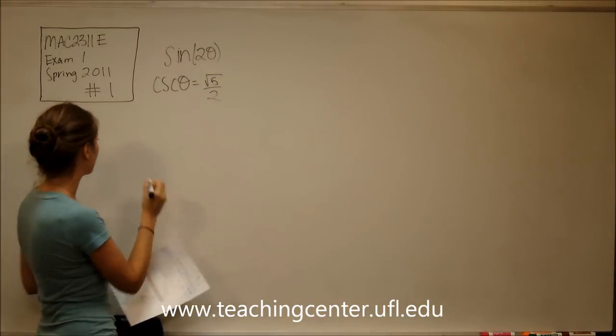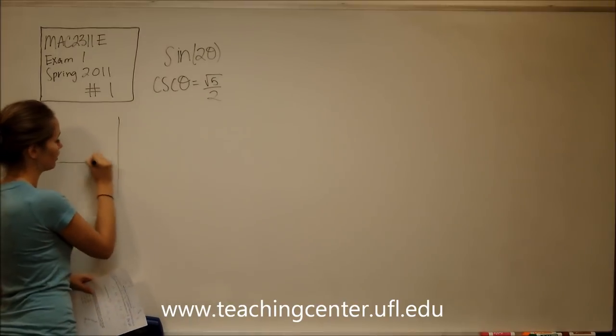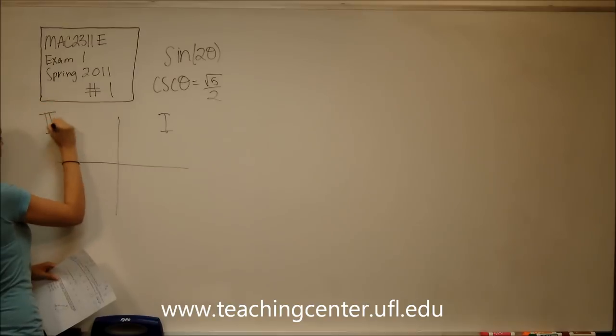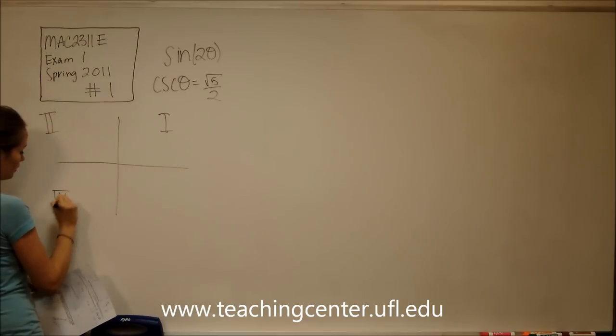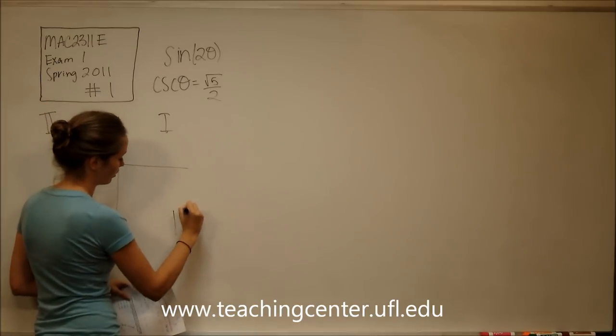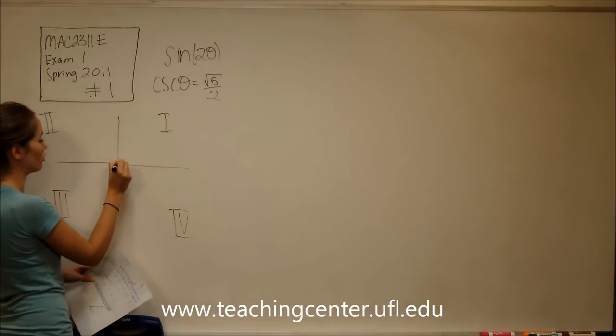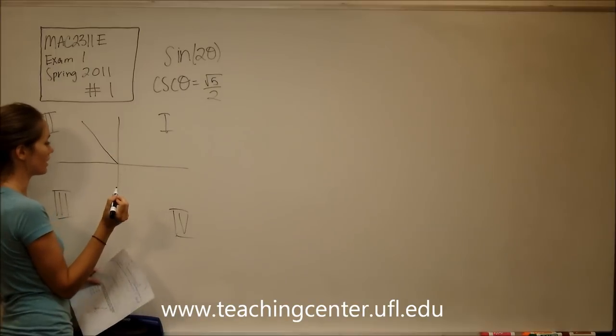Okay, and we also know that it's in quadrant two, so we have quadrant one, quadrant two, quadrant three, and quadrant four. So we know that our theta is in quadrant two, so it's going to be looking something like this.